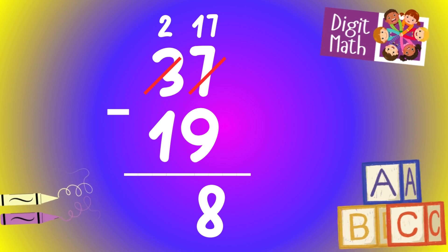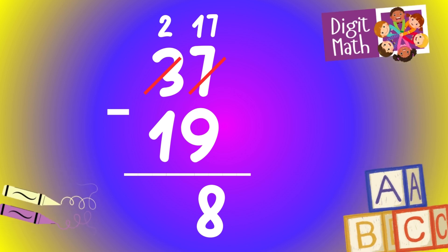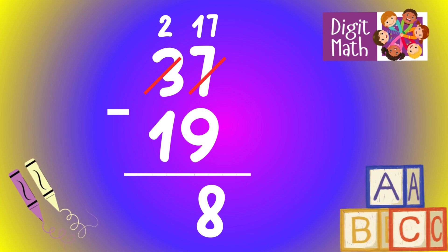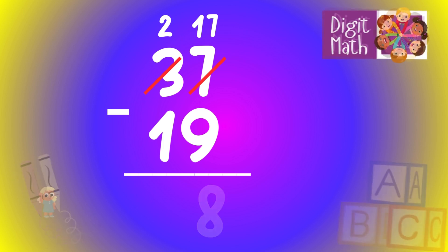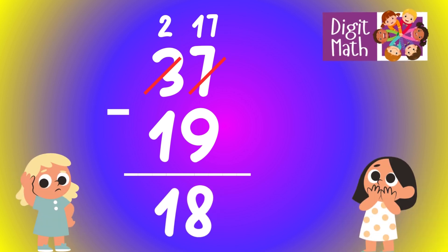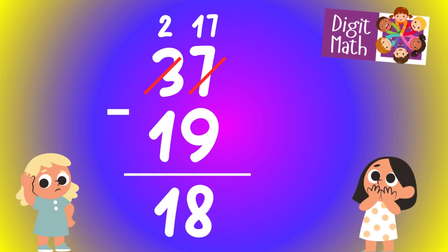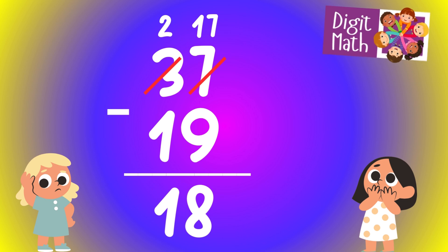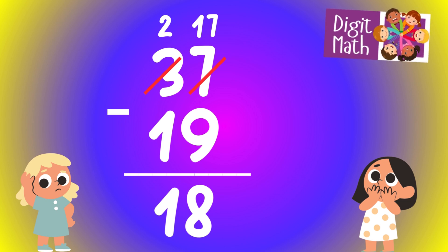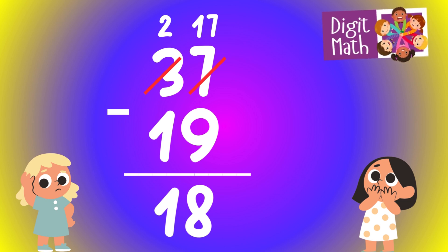In the tens column, we now have 2. Subtract 1 from 2, which equals 1. So the final result is 37 minus 19 equals 18.